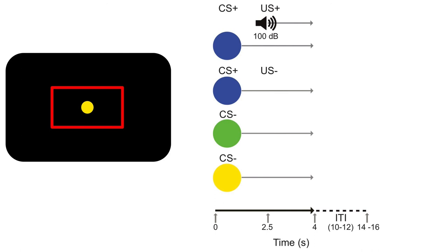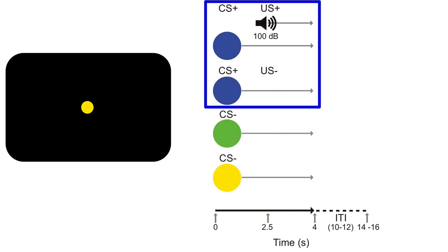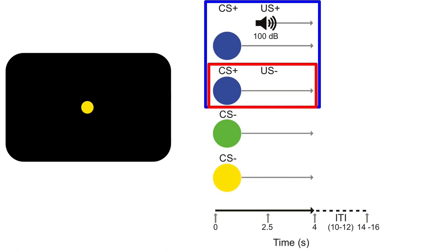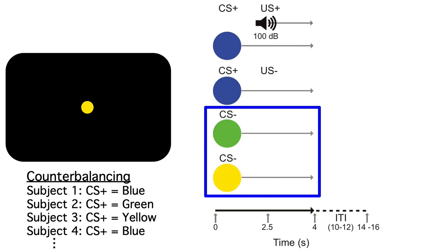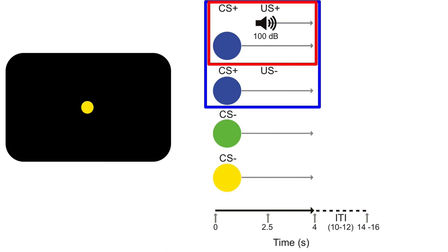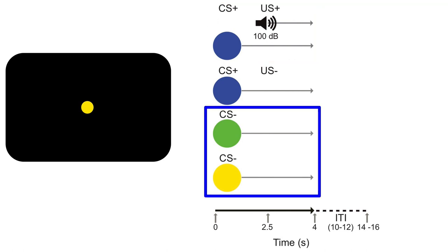The colored circle in the middle of the display was one of three different colors: blue, green, or yellow. One color was the Conditioned Stimulus or CS+, which was associated with the white noise burst. When the CS+ was presented, it had a 50% chance of being followed by the noise burst 2.5 seconds after the onset of the CS+. These are called CS-plus US-plus trials. On the other 50% of CS-plus trials, no noise burst was presented — these are CS-plus US-minus trials. The other two colors were associated with the absence of the noise burst and were called CS-minus stimuli. We counterbalanced which color was CS-plus and which colors were CS-minus. As a result, participants learned that the aversive noise burst often occurred following the CS-plus color but never occurred following the CS-minus color. The question was whether the CS-plus would elicit a larger LPP than the CS-minus.